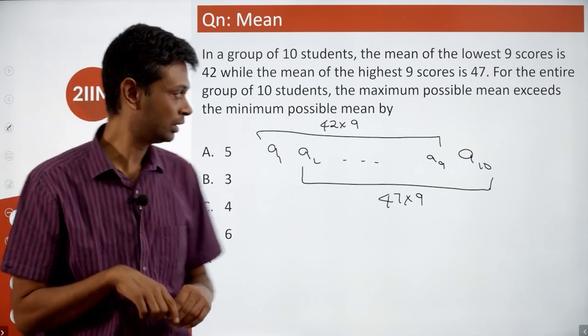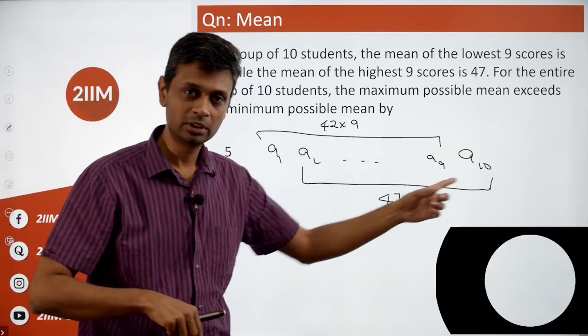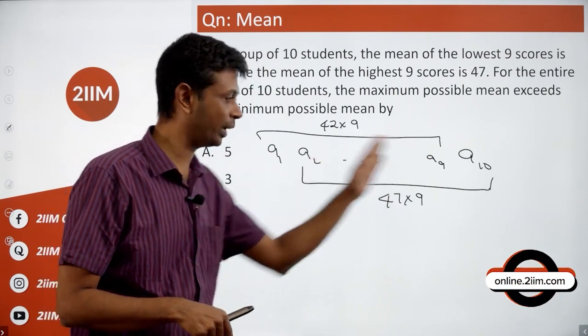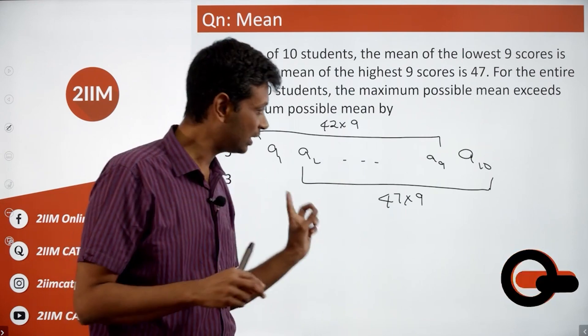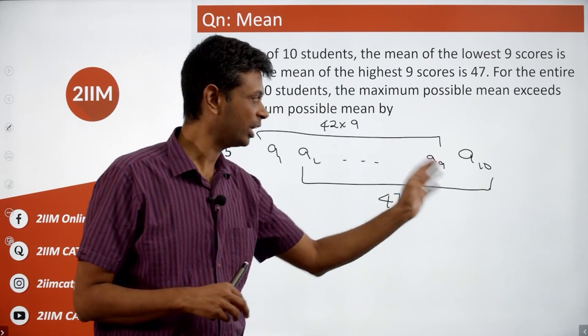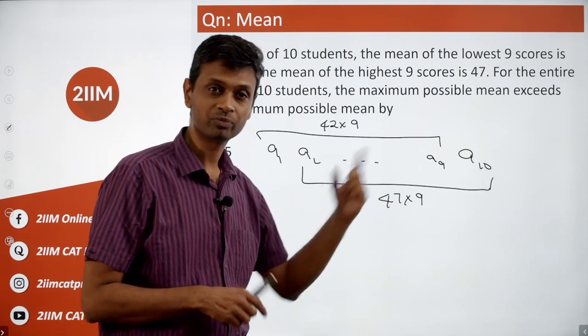The sum of the first nine is a1 through a9, or keeping a1 aside, it's a2 to a9. The sum of the last nine is a2 to a10, or keeping a10 aside, it's a2 to a9. This bunch...